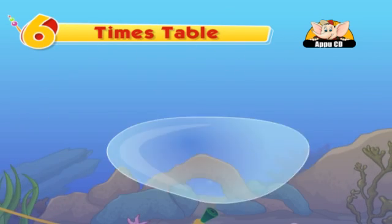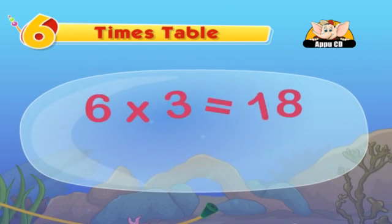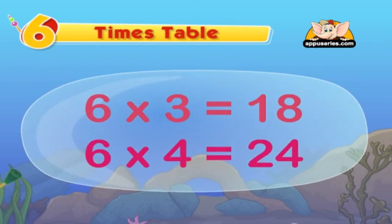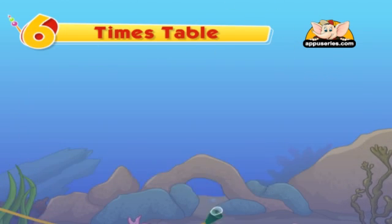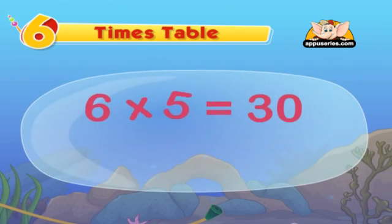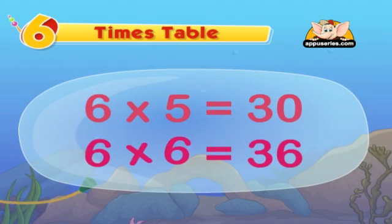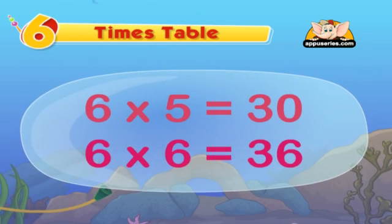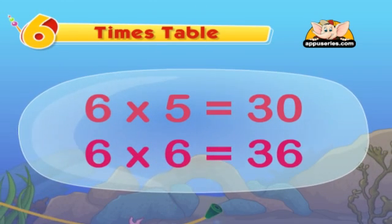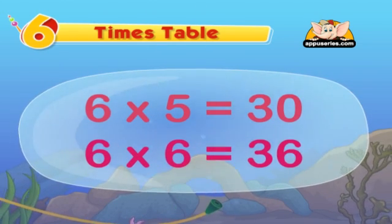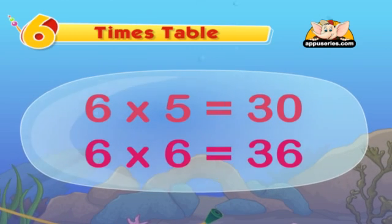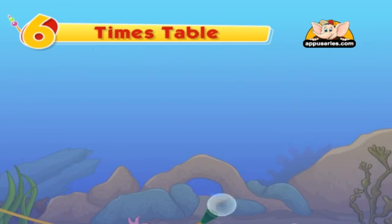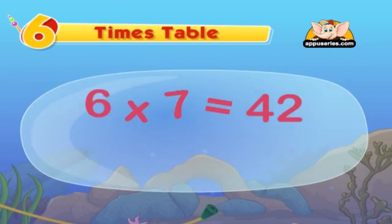6 3s are 18, 6 4s are 24, 6 5s are 36, 6 6s are 36. Double the table 3, 2, get the table 6. 6 7s are 42.